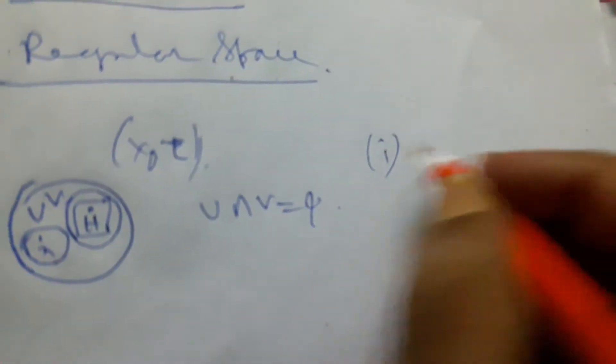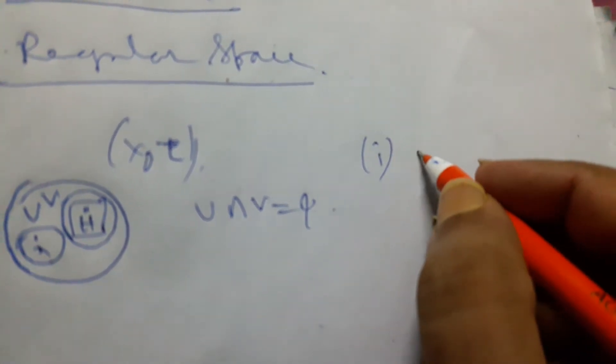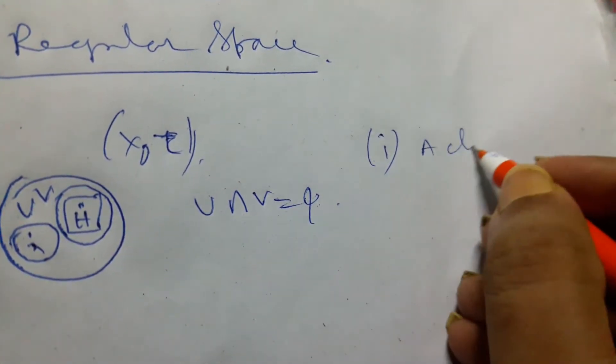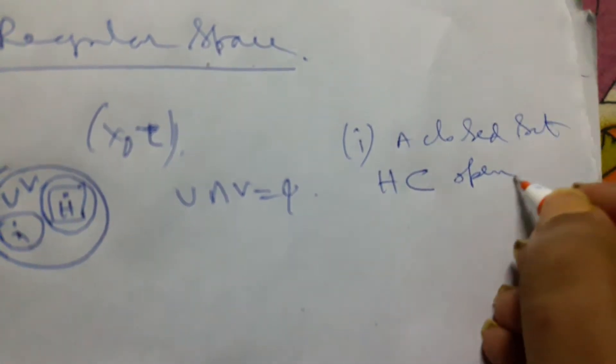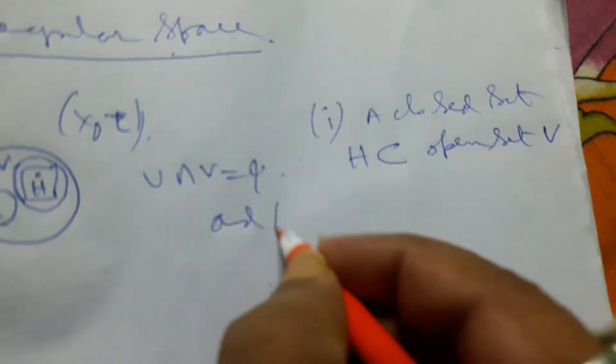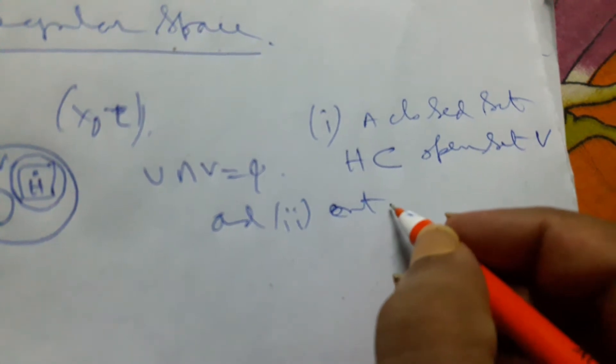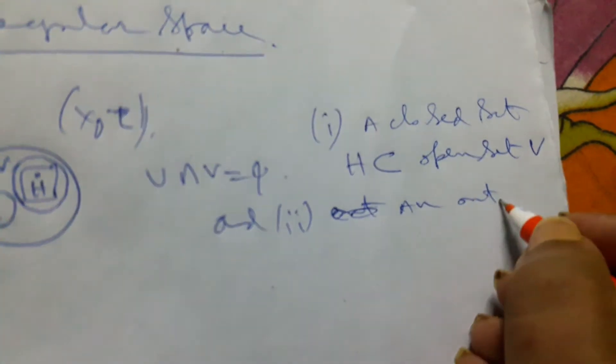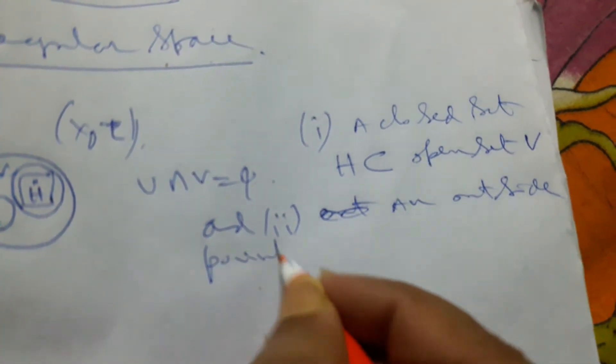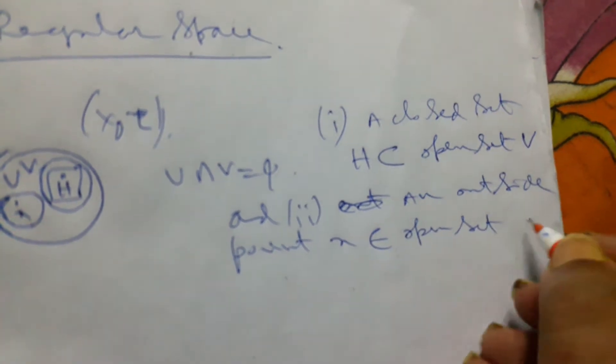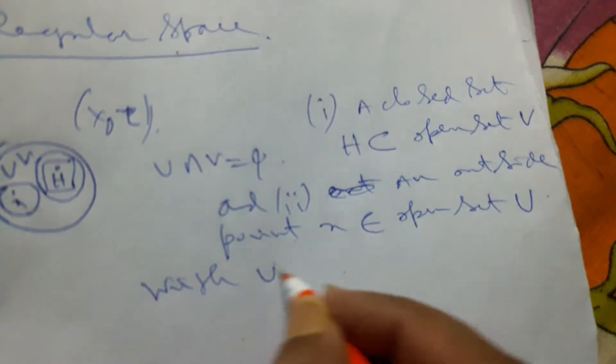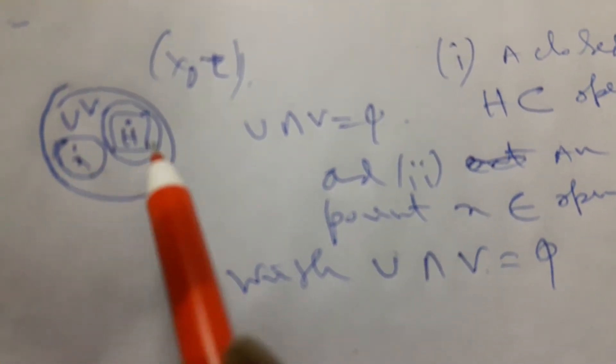Our consideration is number one point which we keep in mind: a closed set H which is included in open set V, and number two is outside point on this set x that belongs to open set U with U intersection V is phi. They never meet, they are disjoint.